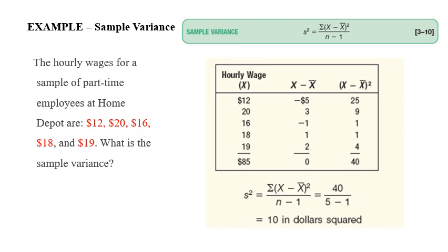By getting the square, we have 25, 9, 1, 1, and 4. The sum is 40. So if we divide 40 over n minus 1, which means 5 minus 1, it will be 10. 10 is the sample variance.